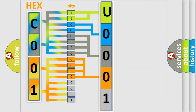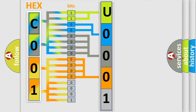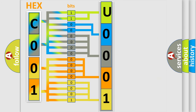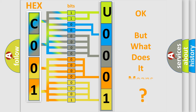A single byte conceals 256 possible combinations. We now know in what way the diagnostic tool translates the received information into a more comprehensible format. The number itself does not make sense to us if we cannot assign information about what it actually expresses.